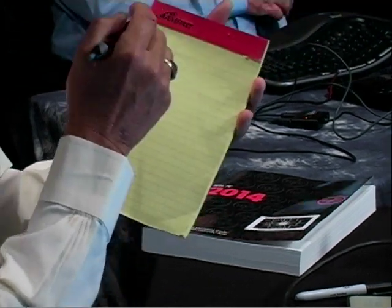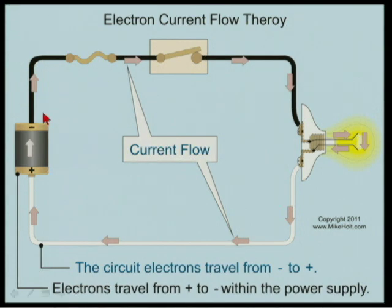I'd like you to take a pencil and paper and write some fundamental things down. Fundamental number one: current leaves the source and returns to the source. Those are facts. Take a look at this graphic — write it down. The current leaves the power supply, goes to the load, and returns back. That's called an electrical circuit.